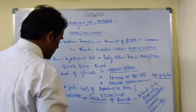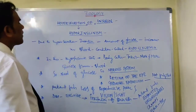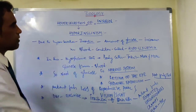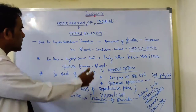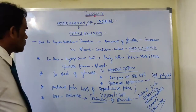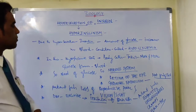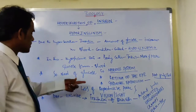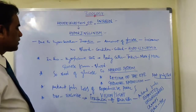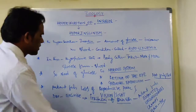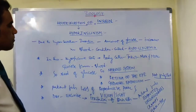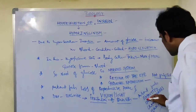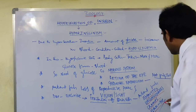So to summarize: hyperinsulinism is caused due to hypersecretion of insulin, which decreases the amount of glucose in the blood. In this hypoglycemic state, body cells take more and more glucose from the blood, so the need of glucose for the nervous system, retina of the eye, and germinal epithelium is not fulfilled. As a result, the patient feels loss of reproductive power, vision, exhaustion, unconsciousness, cramps, and may even die.